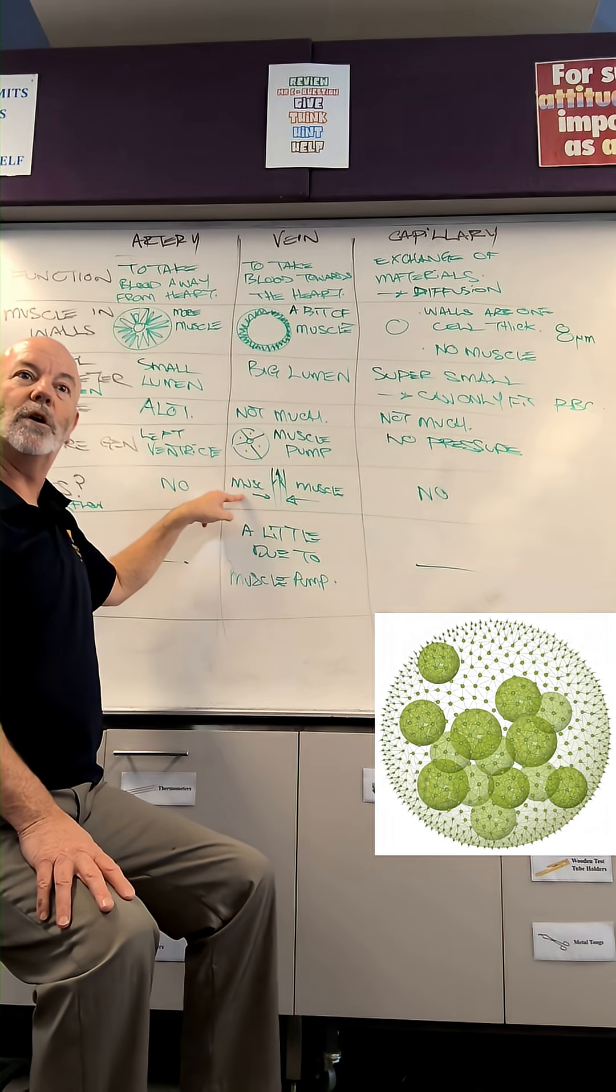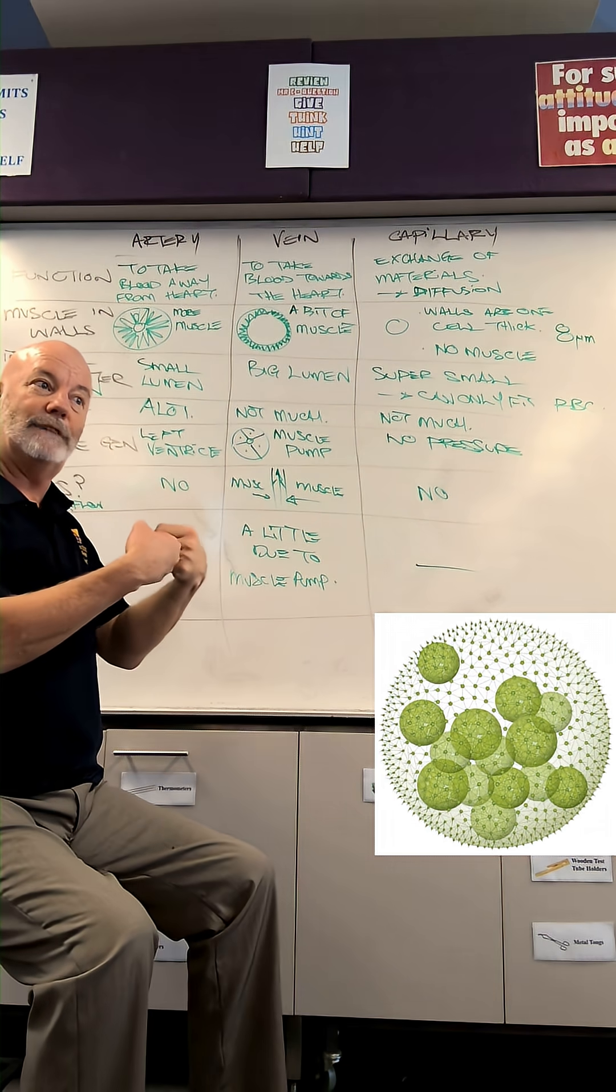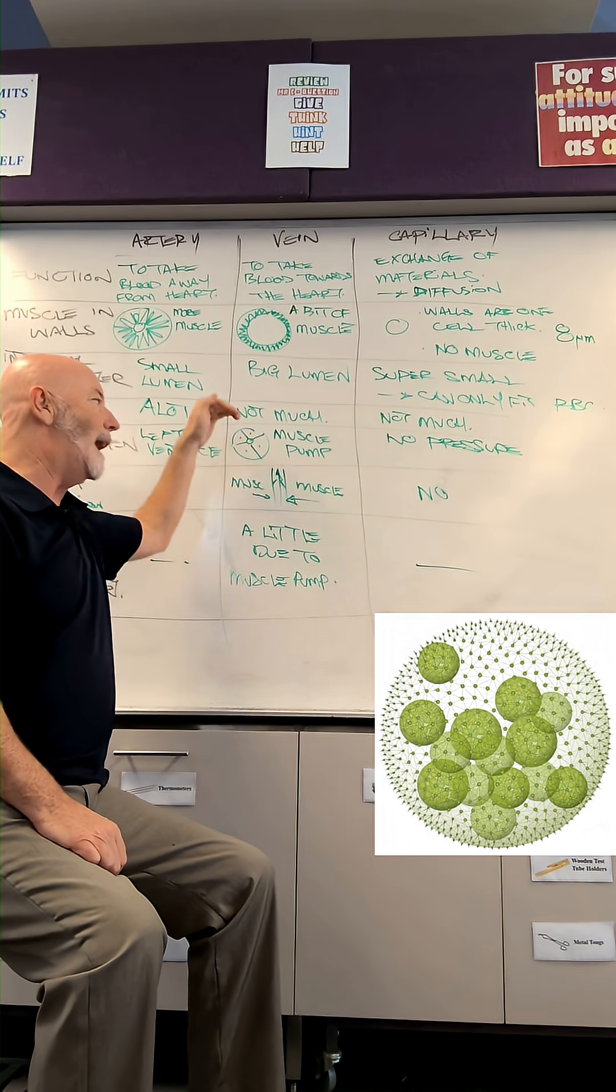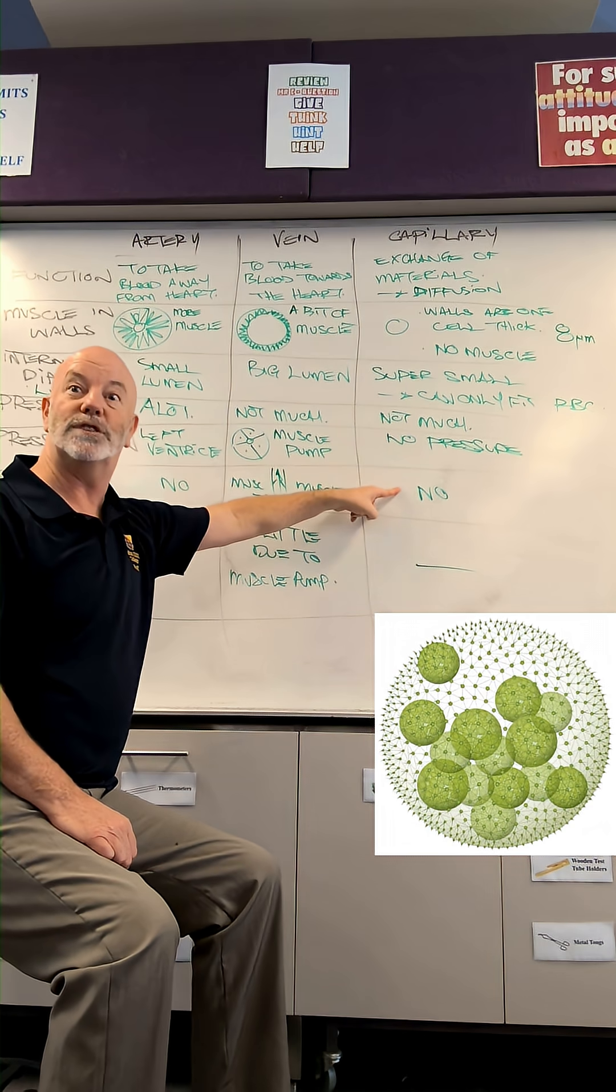Veins have valves. Not only do they have the muscle pump pushing on the vein, but valves allow the blood to only go in one direction and not go backwards. Capillaries don't have valves because they're too small.